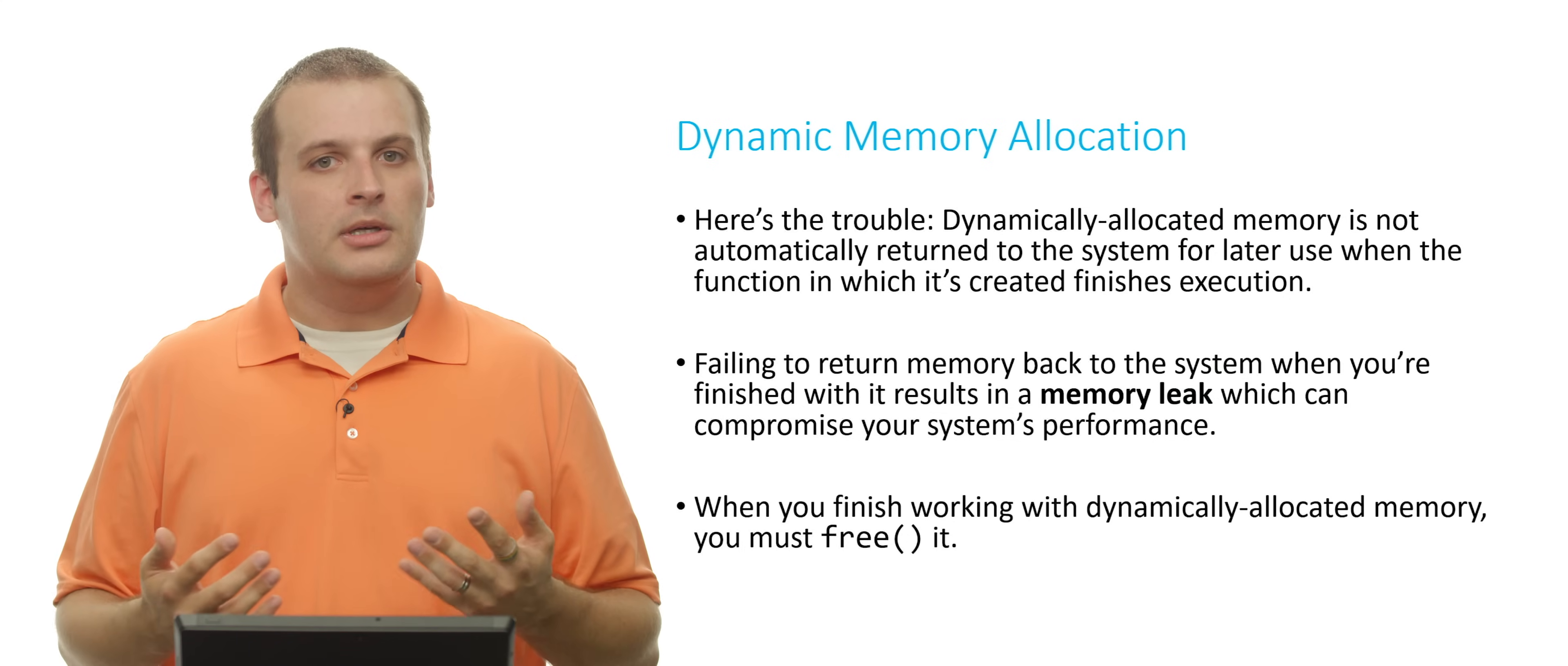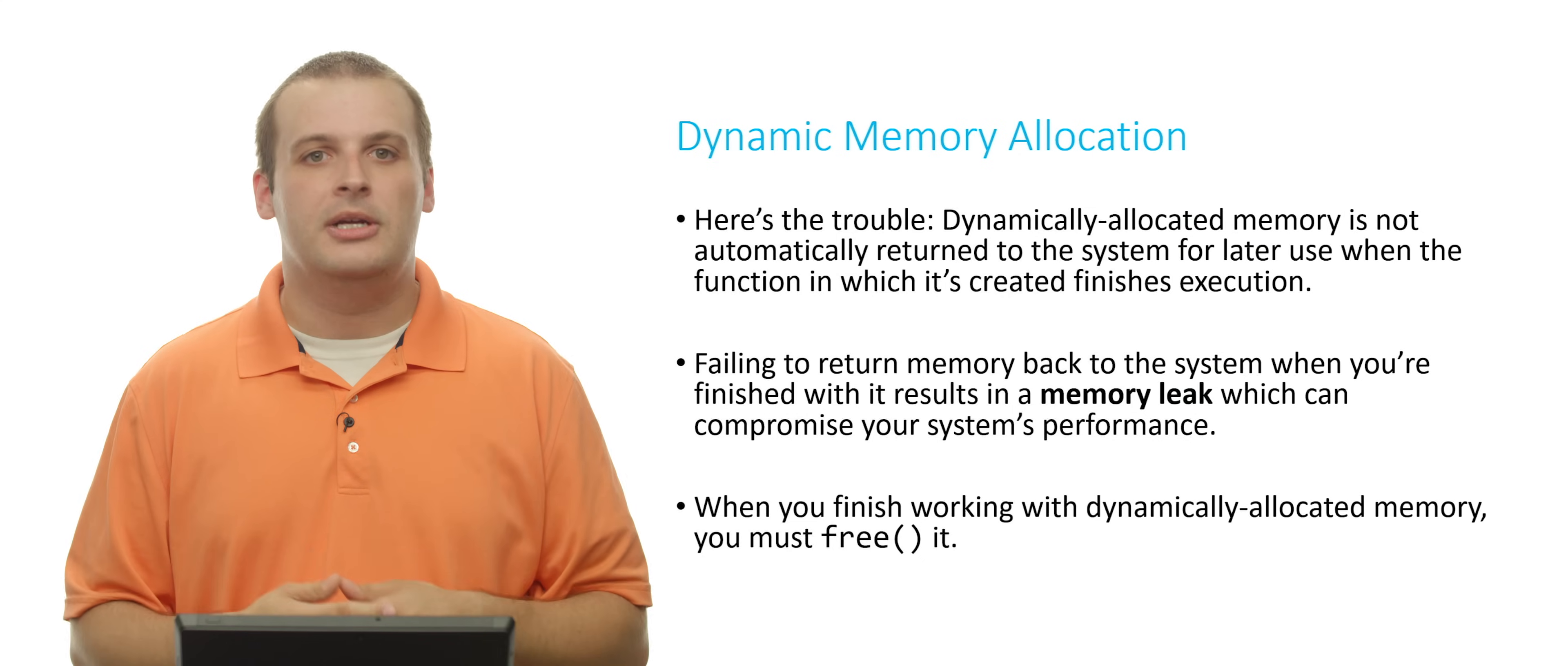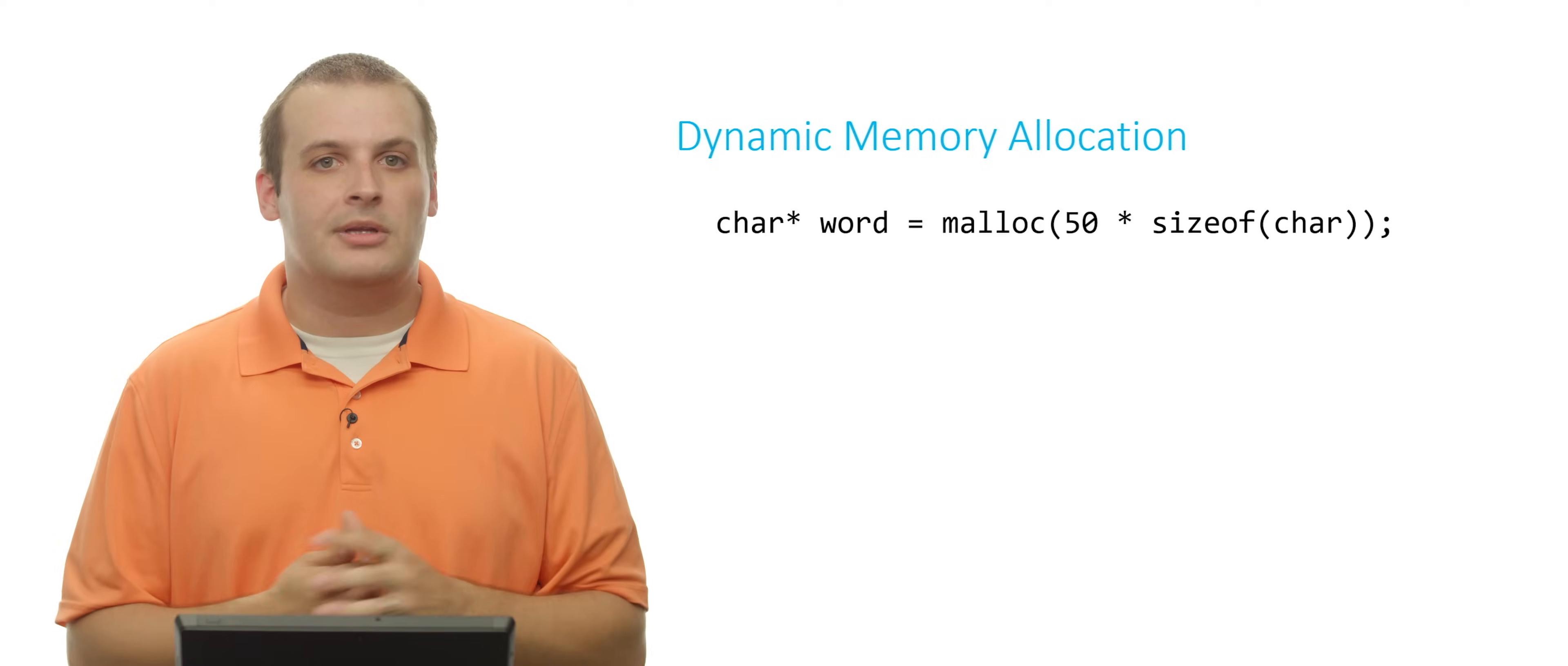Now the rule is, as I mentioned before, when you're done working with dynamically allocated memory, all you have to do is free it. And free is another function that is available in standard lib.h, and basically what you pass to free is a pointer to any memory that you have dynamically allocated previously. And basically that's just telling the system, I'm done. You can use this memory for whatever you'd like.